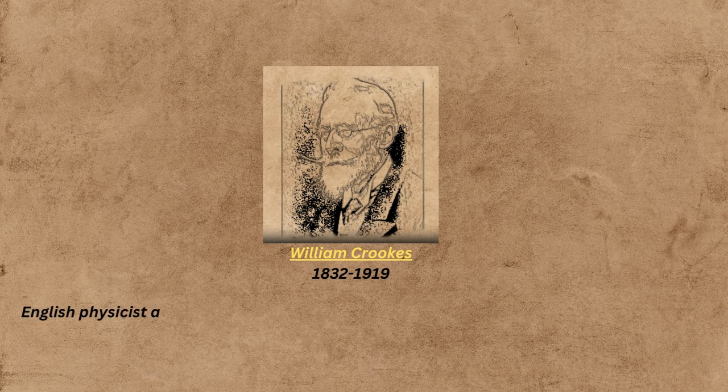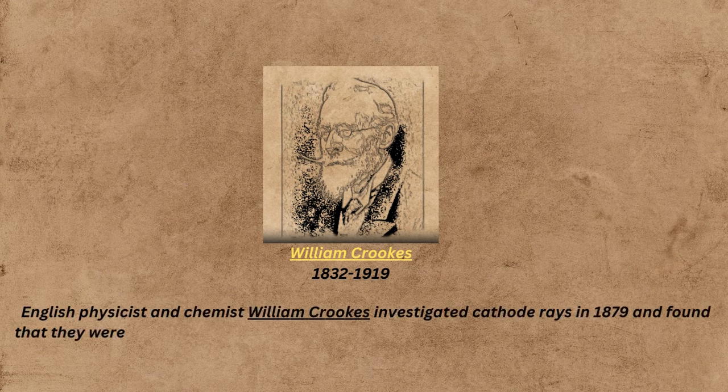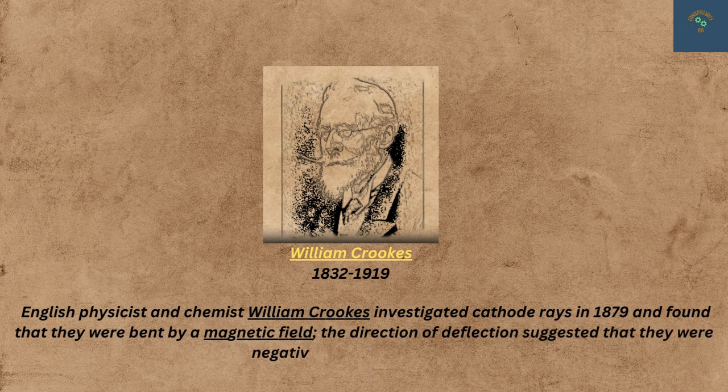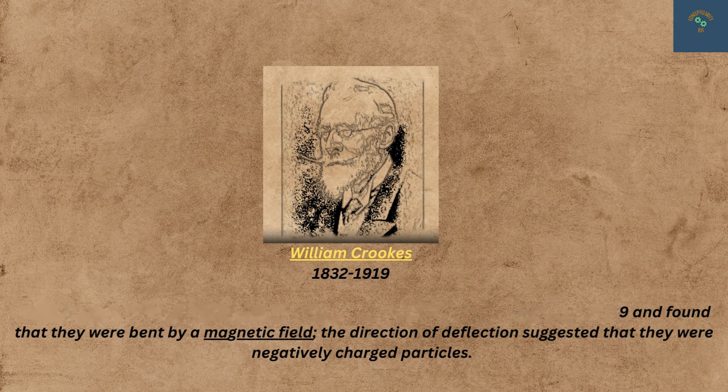William Crookes in 1879 further investigated the cathode rays and found that cathode rays were bent by a magnetic field.